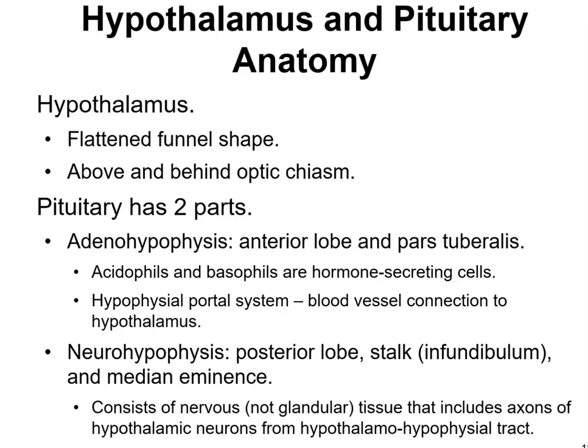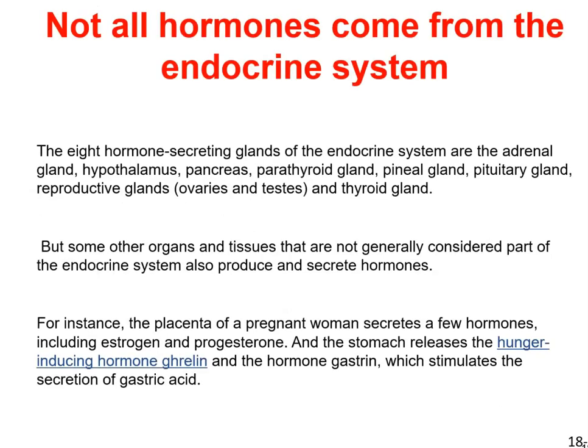Make sure you know the two parts of the pituitary gland: the adenohypophysis is the anterior lobe, and the neurohypophysis is the posterior lobe. The neurohypophysis consists of nervous glandular tissue including axons of hypothalamic neurons from the hypothalamic-hypophysial tract. The eight hormone-secreting glands of the endocrine system are the adrenal gland, hypothalamus, pancreas, parathyroid gland, pineal gland, pituitary gland, reproductive glands (ovaries and testes), and the thyroid gland.